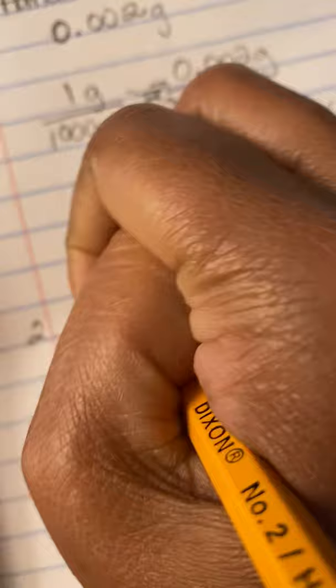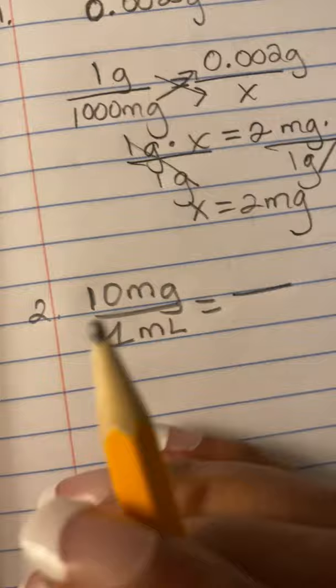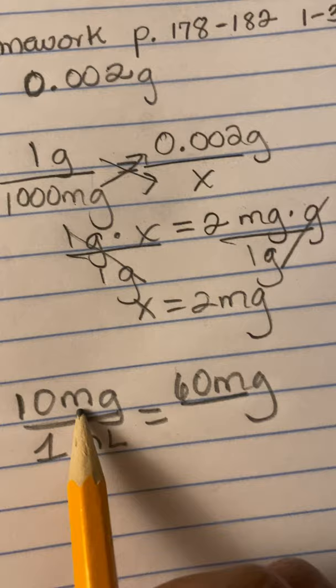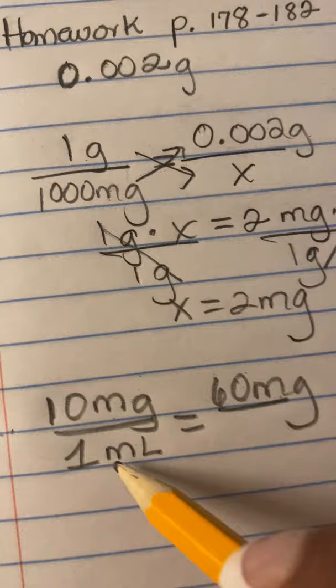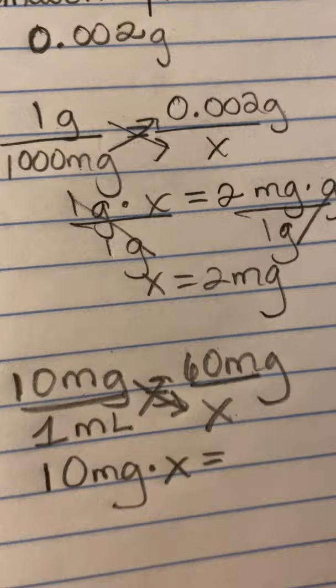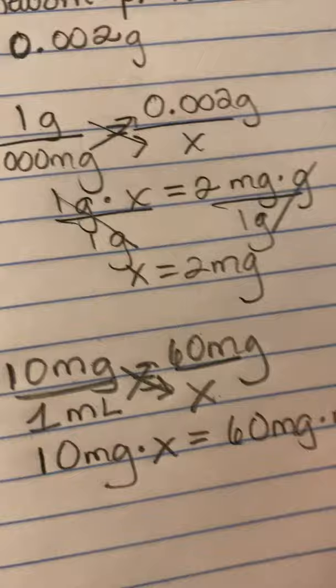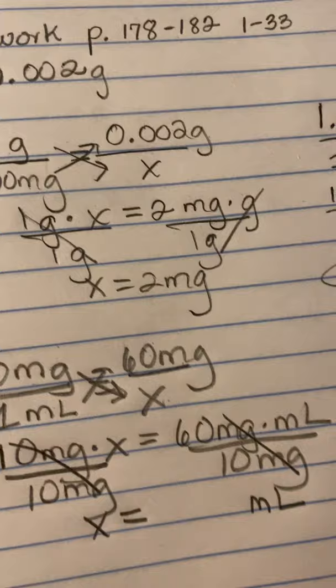Next, we're given 60 milligrams. Make sure that if you have milligrams in the numerator spot, you put it in the numerator. Put that over X and cross multiply: 10 milligrams times X equals 1 times 60, which is 60 milligrams times milliliter. To isolate the variable, divide both sides by 10 milligrams, cancel those out, and the only thing left is milliliter. 60 divided by 10 is 6.